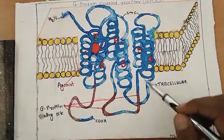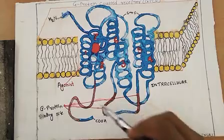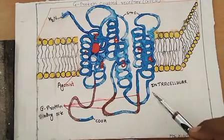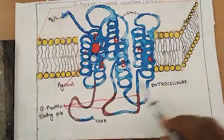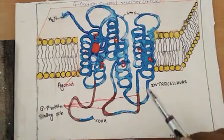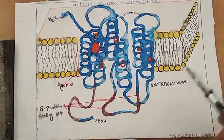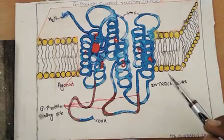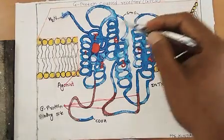In the resting state, the G protein coupled receptor is bound with GDP to the exposed domain of the G protein, as you can see here.